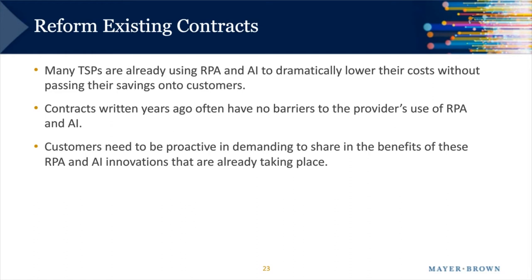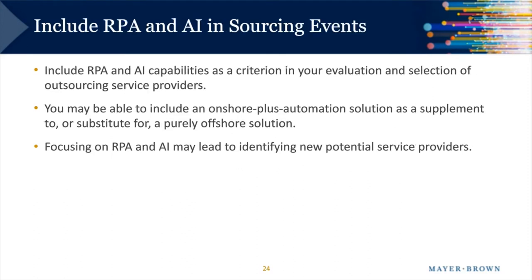How do you create a dialogue with your providers on how you can benefit from RPA and AI under existing contracts? That is a different answer for each contract. It really depends on your contract terms and whether you have provisions like benchmarking, rights to insource or resource, or termination for convenience as leverage to start a conversation with the provider. For new outsourced services and technology agreements, when your procurement team is running a new sourcing event, make sure that RPA and AI capabilities are part of the evaluation and selection criteria for providers — not all providers are at the vanguard of RPA and AI adoption.